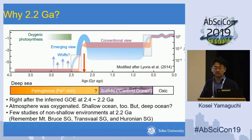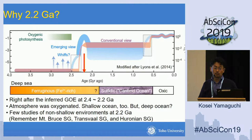But how about the deep ocean? So far, few studies of non-shallow environments — that is, deep environments — at 2.2 GA have been done. Please remember that the Mount Bruce Supergroup in Australia, the Transvaal Supergroup in South Africa, and the Huronian Supergroup in Canada — all of these very important geological records have mainly shallower rocks in the upper portion.